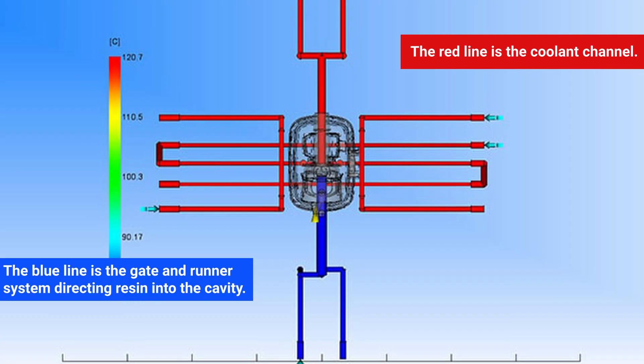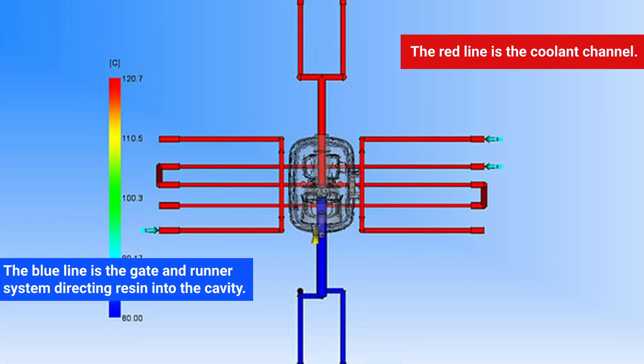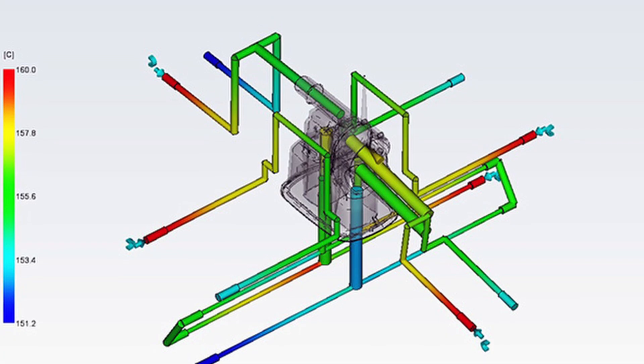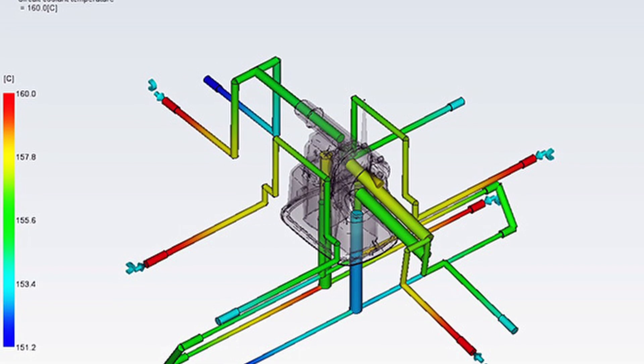The blue line is the gate and runner system directing resin into the cavity. The red line is the coolant channel. Notice that internal baffles and U-joints were used to force the coolant in a return circuit.